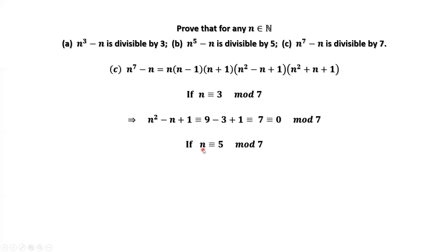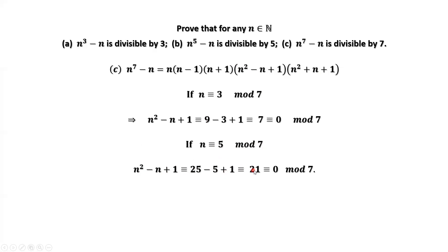If the remainder of N divided by 7 is 5, we use this factor again. The remainder of N squared minus N plus 1 equals 5 squared minus 5 plus 1, which is 25 minus 5 plus 1. Simplifying gives 21, and 21 is divisible by 7. Therefore, N to the power of 7 minus N is divisible by 7 when the remainder is 5, completing all cases.